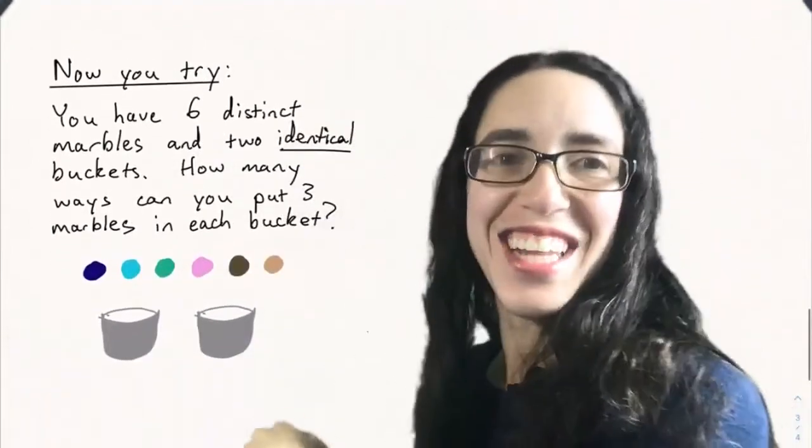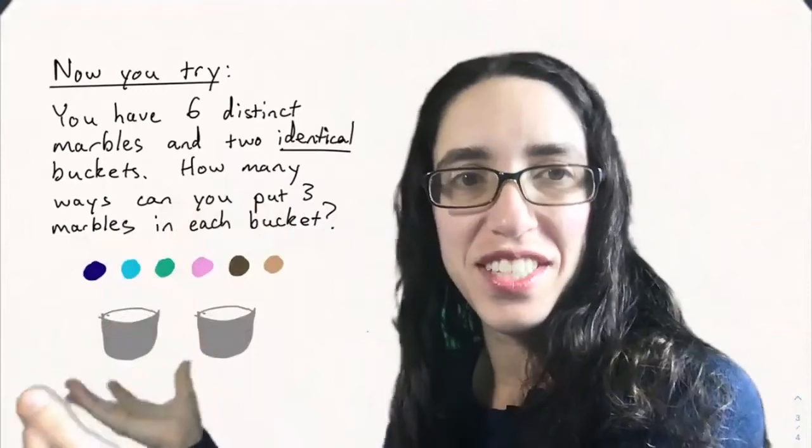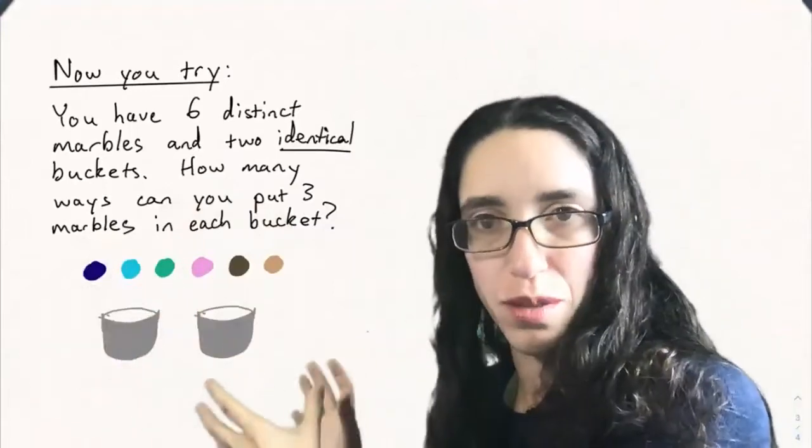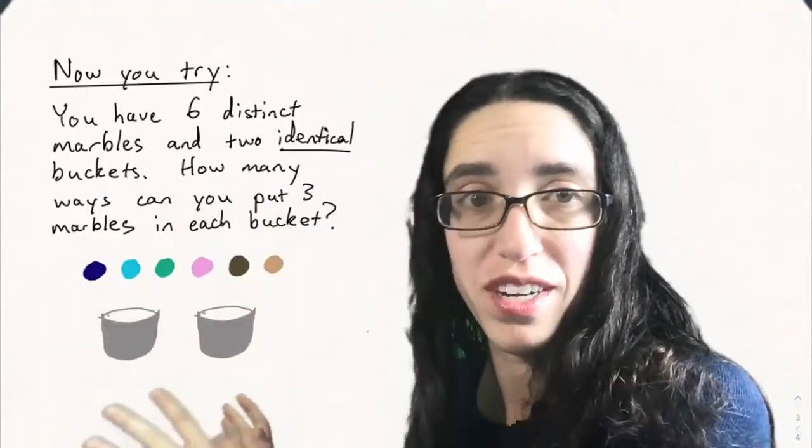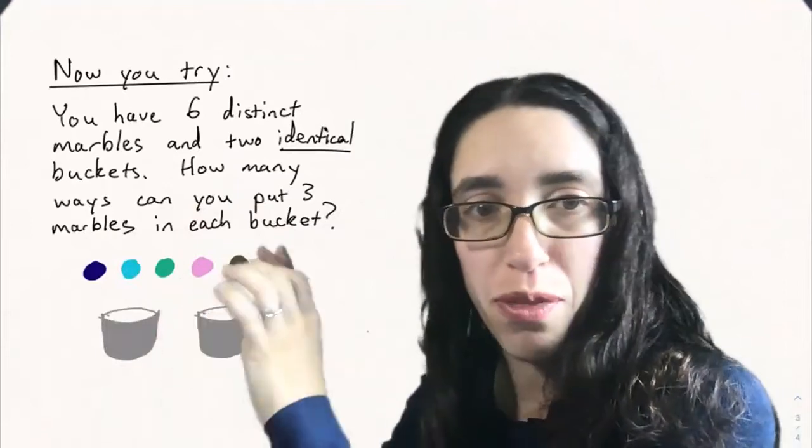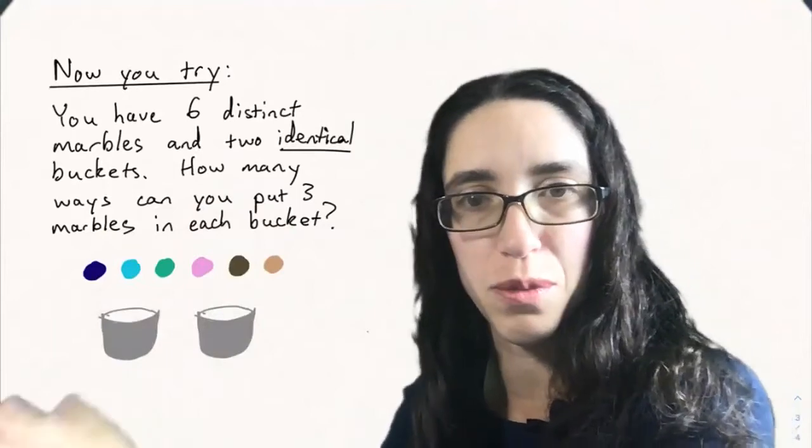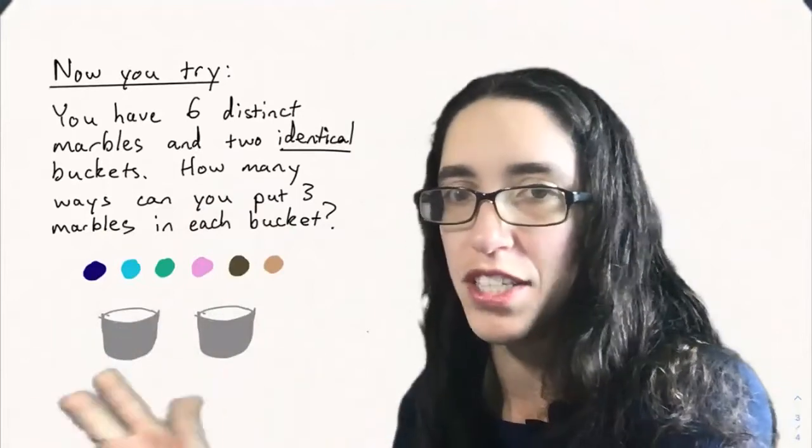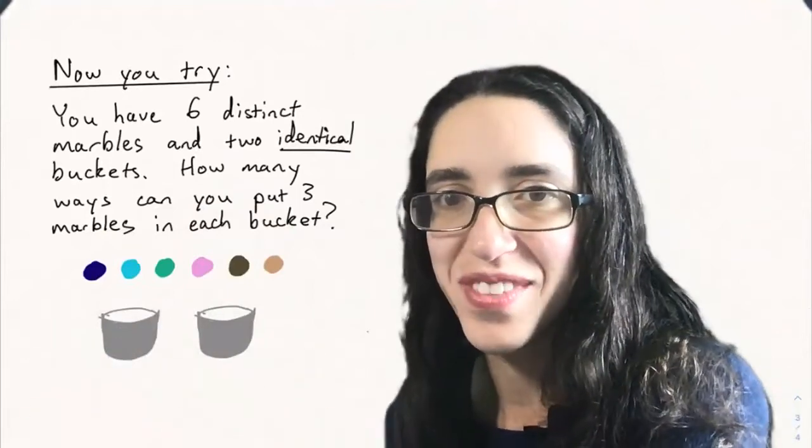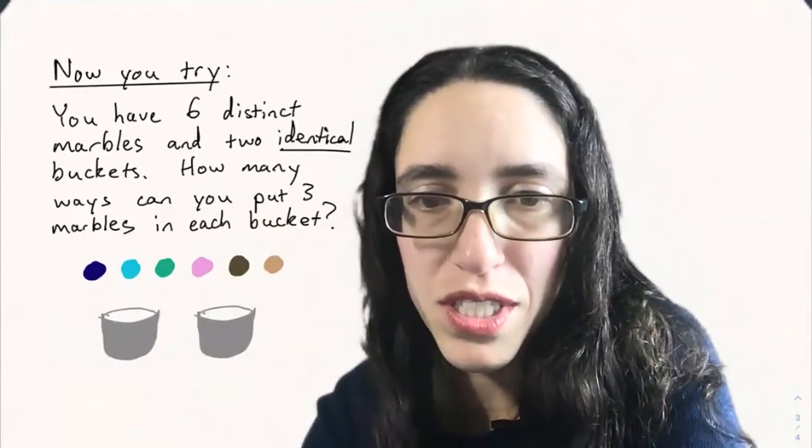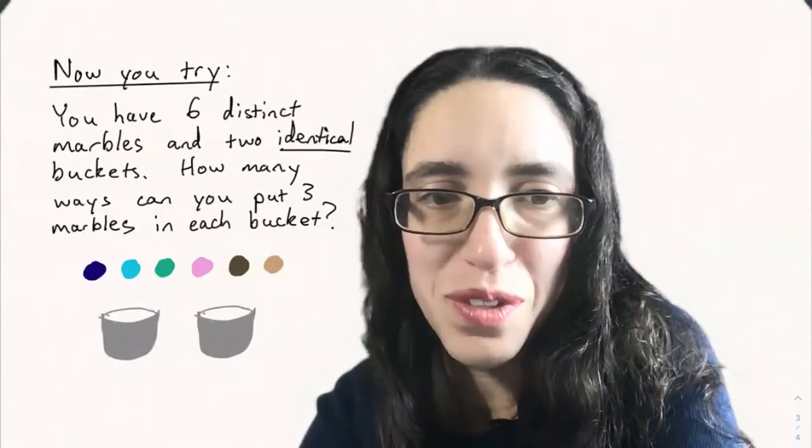So now it's your turn. Now you try. Say you have six distinct marbles and two identical buckets. You can't tell the difference between these buckets. How many ways can you put three marbles in each bucket? So you want to split your six into a group of three and a group of three, but remember if you switch the buckets, that's not a different way of doing it. Try to use the division principle to do that, and we will see you next time.